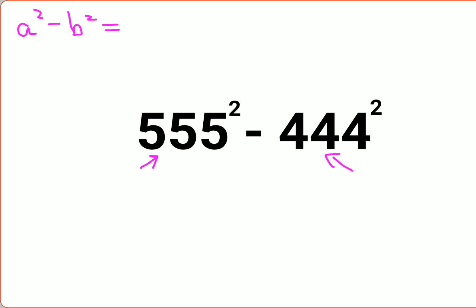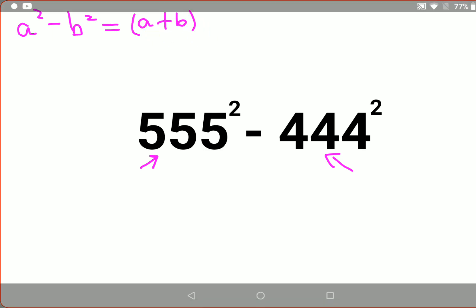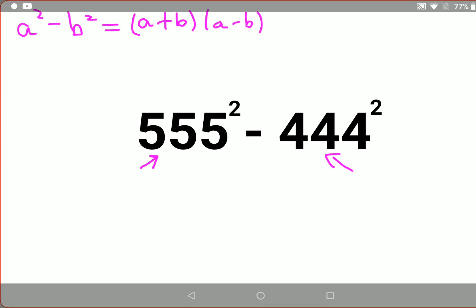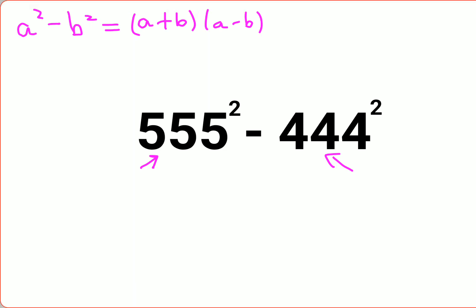...directly use the expansion of a² - b², which is nothing but (a + b)(a - b). So here we can say this can be written as (555 + 444)(555 - 444).